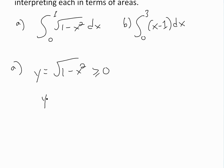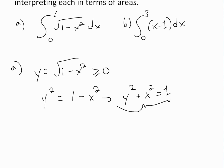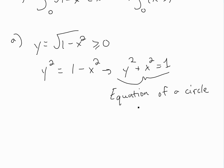We get y squared equals one minus x squared. Putting x squared on the other side gives y squared plus x squared equals one. This is the equation of a circle with radius equal to one. You can see a video link below in the info for a proof of the equation of a circle.